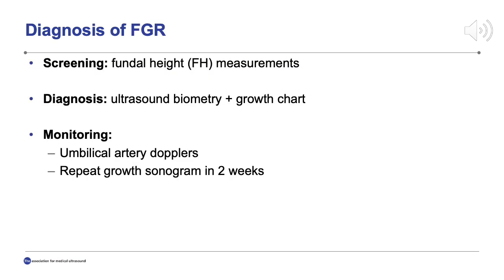Fetal growth restriction is screened for using fundal height measurements during routine prenatal care visits. It is then diagnosed using ultrasound biometry applied to one of several growth charts available, including those based on the Hadlock formula, Intergrowth 21st, and the National Institute for Child Health and Human Development. I will be discussing further details regarding each of these growth charts subsequently in the presentation.